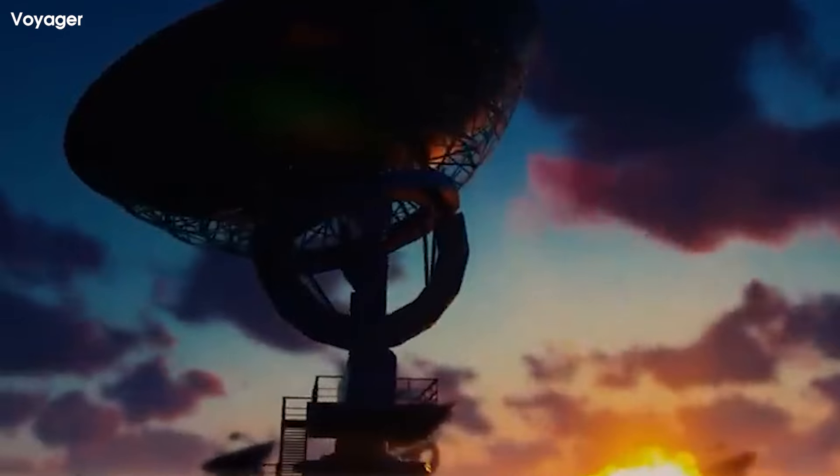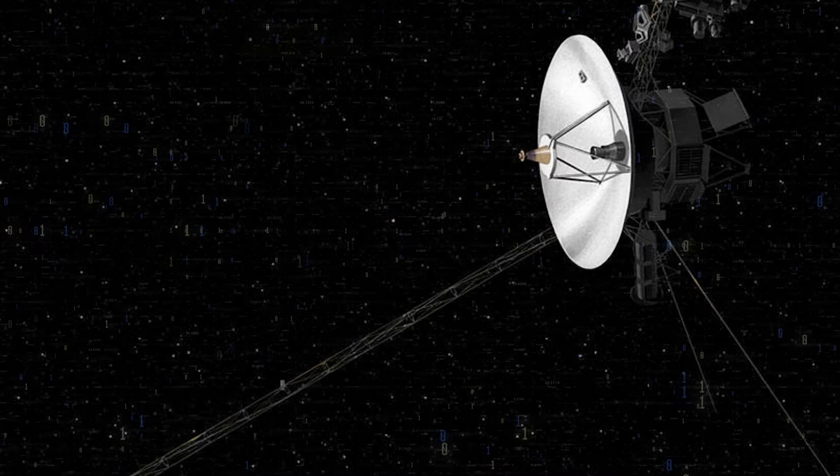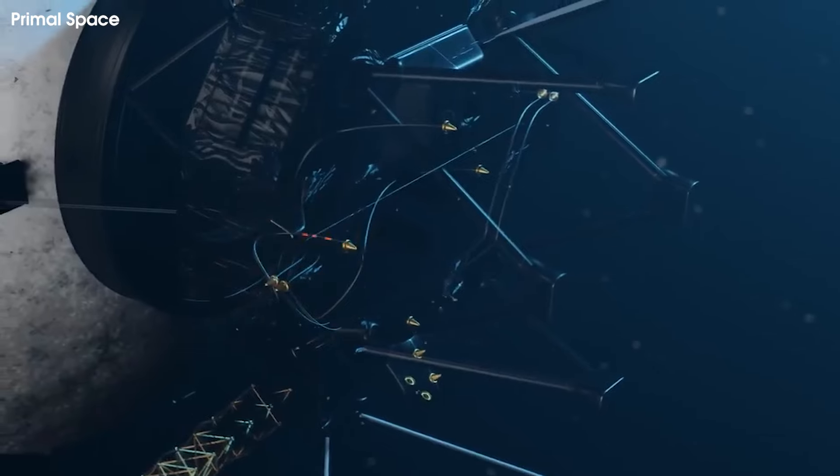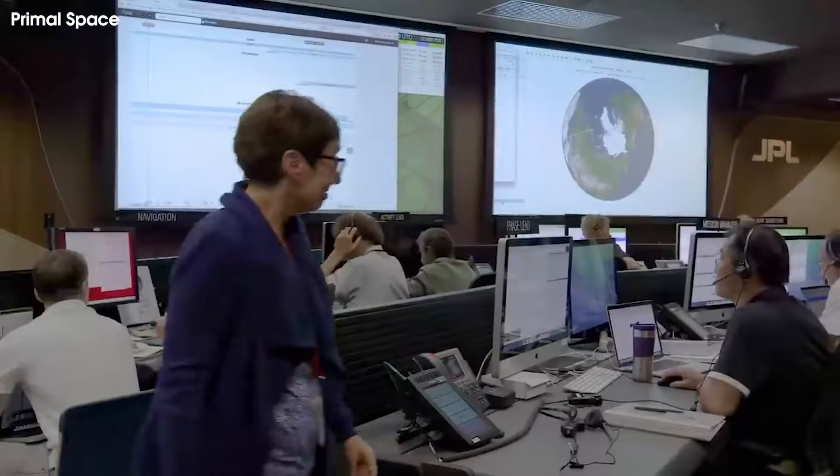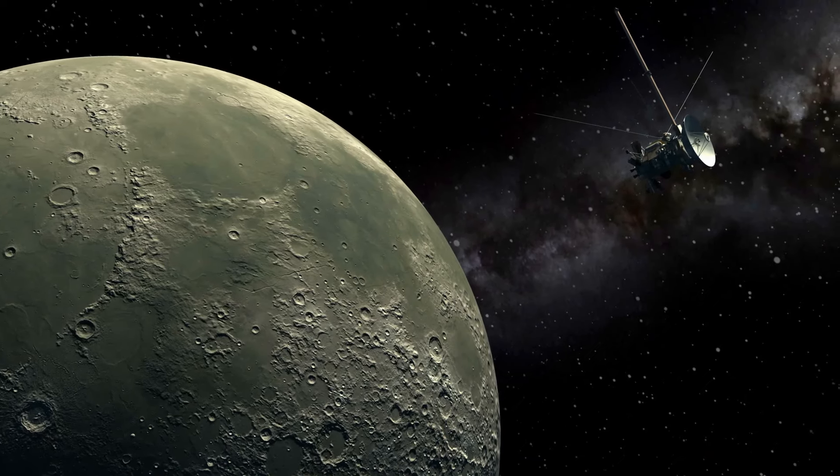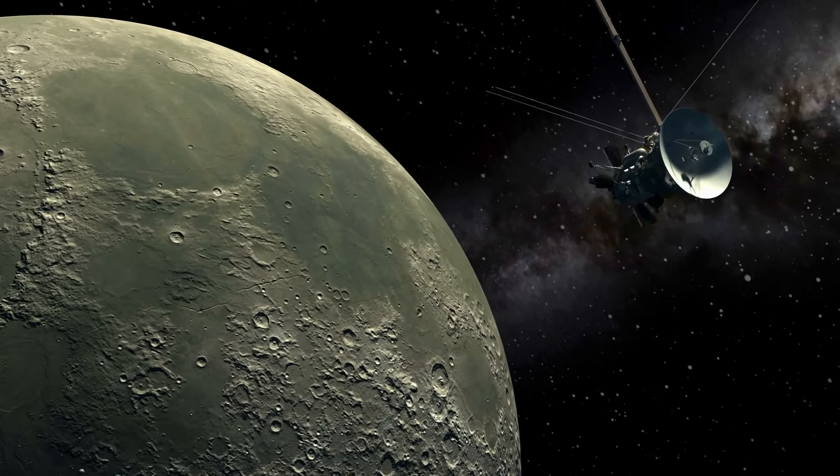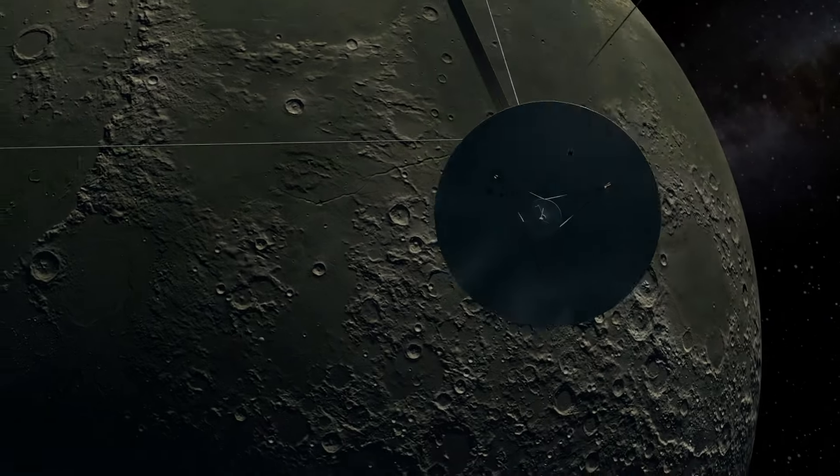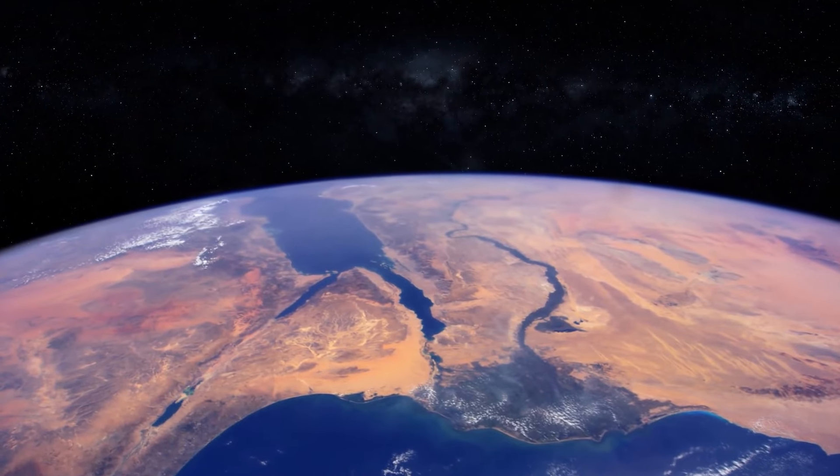When it was developed five decades ago, Voyager's flight data subsystem was an innovation in computing. It was the first computer on a spacecraft to make use of volatile memory. Each Voyager spacecraft launched with two flight data subsystem computers. But Voyager 1's backup flight data subsystem failed in 1981.